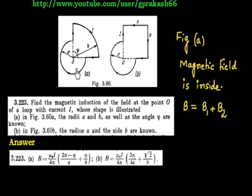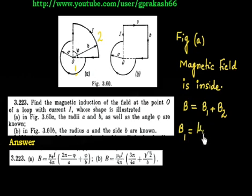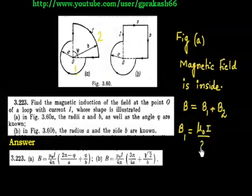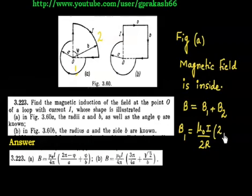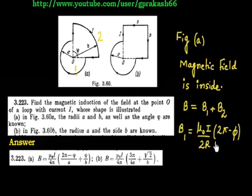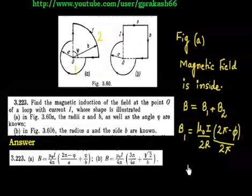Total B = B1 + B2, and this is a scalar sum because both are inward. For a complete circle, the magnetic field is μ₀I / 2R. In this case it is not a complete circle — the angle of the first arc is (2π − φ). So B1 = (μ₀I / 2A) × (2π − φ) / 2π.